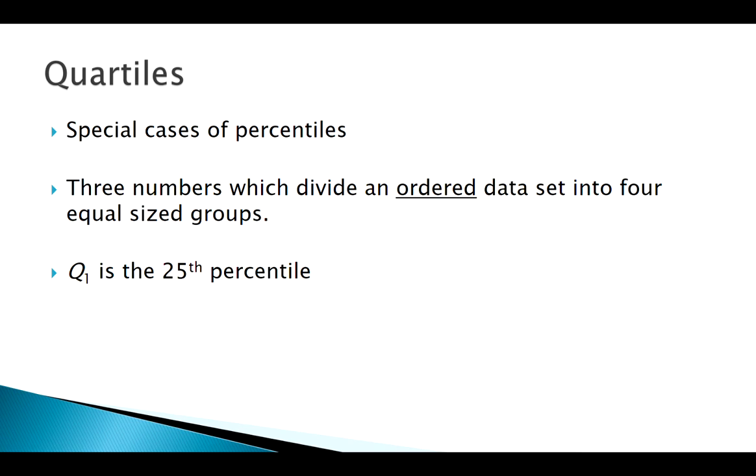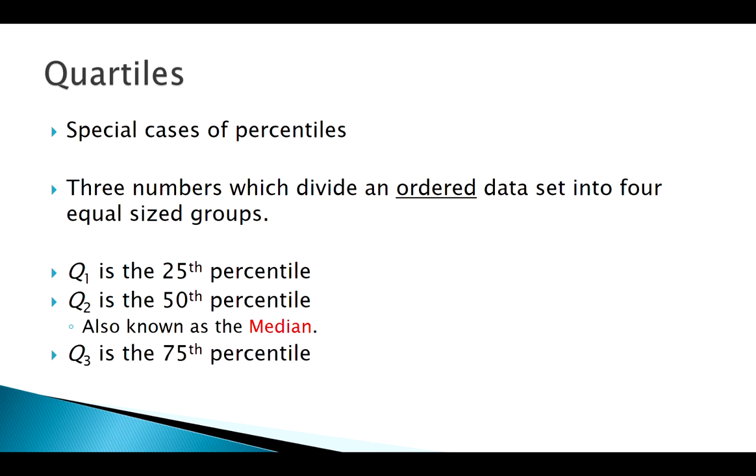So Q1 is the 25th percentile, right, where 25% of the data is less than, 75% is more than, Q2 is the 50th percentile, also known as something you may have heard of before, the median, and Q3 is our 75th percentile.